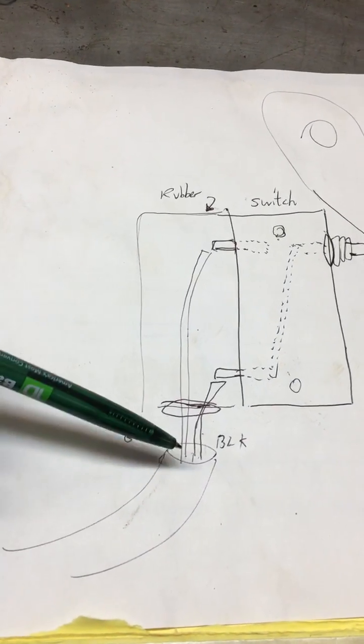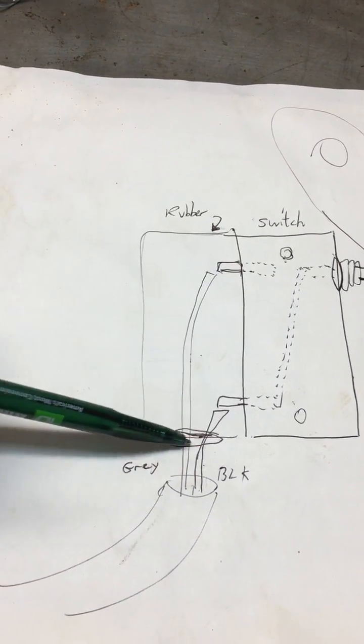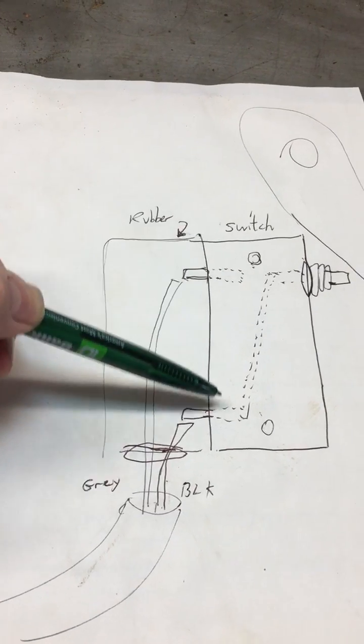All right, here's the rundown. The wire comes in, this whole section here is the rubber, and then this is the hard plastic switch.